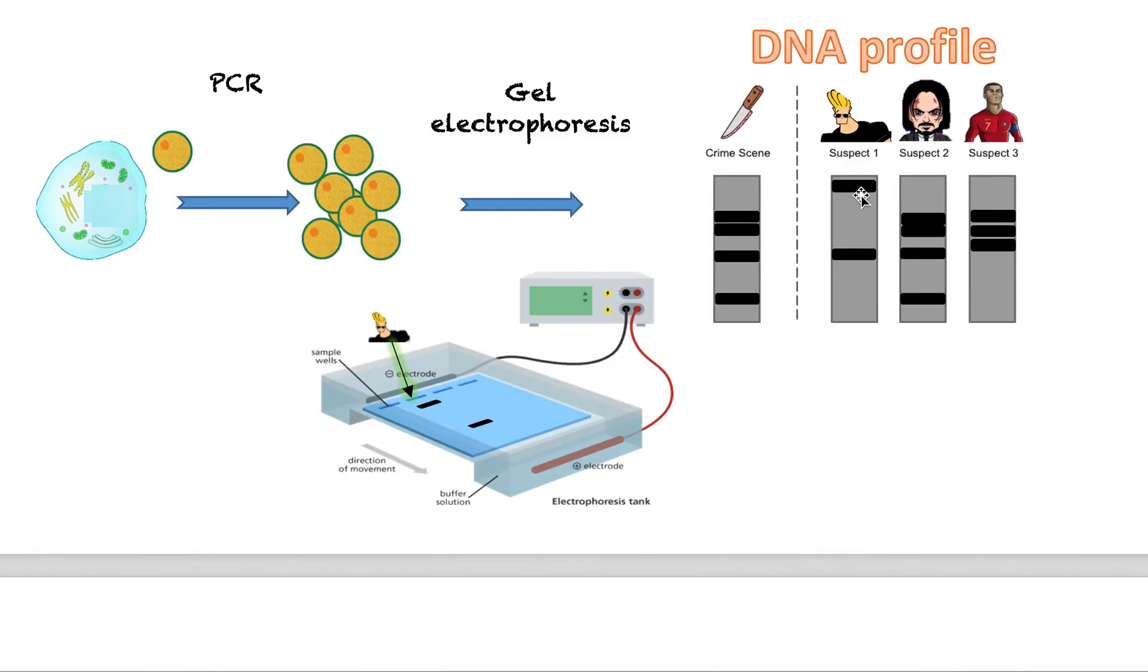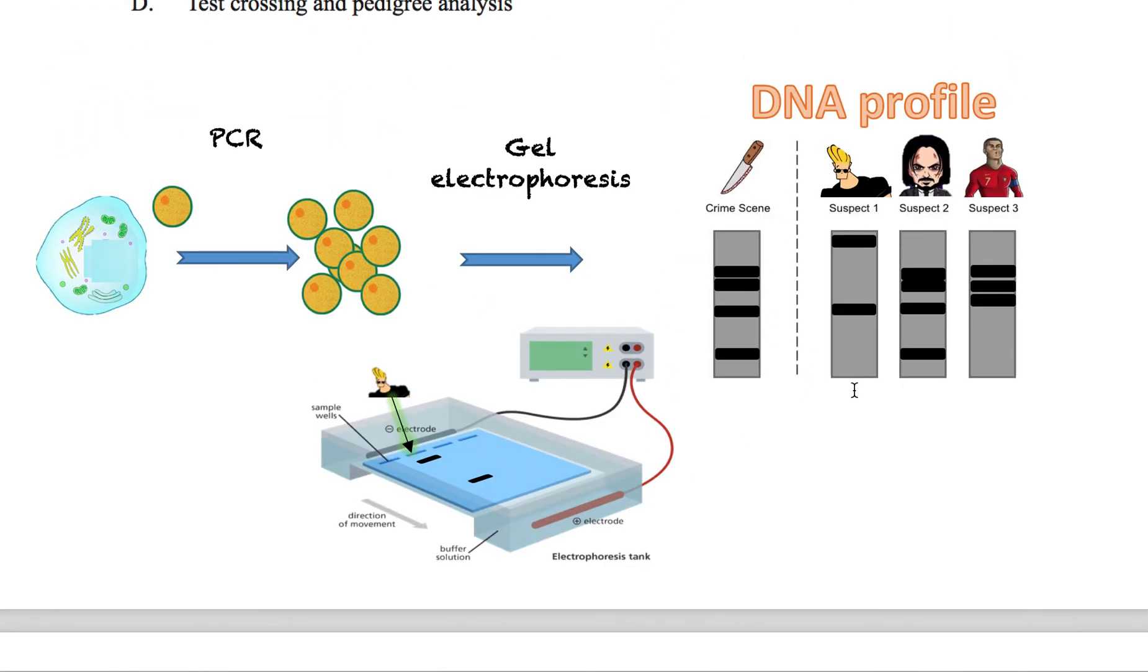So why can this be used? I sort of just went over that so I'll open this so you can try it by yourself first. So why can we use this? I said before people who have similar DNA like a parent and a kid will have a similar DNA profile and so for example if these three people think they're the father.